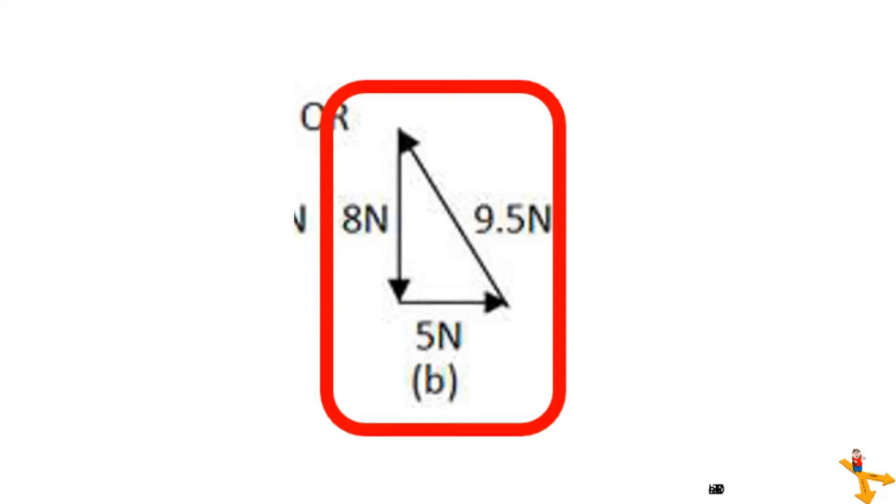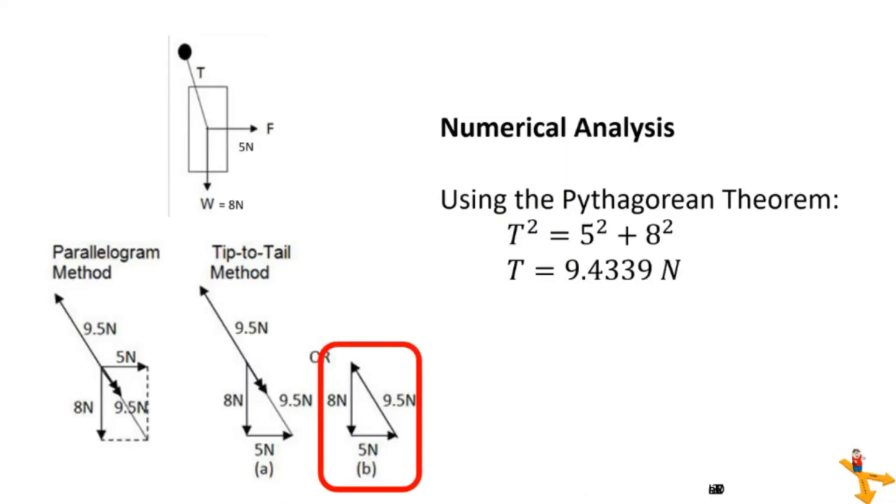To solve this using a numerical analysis, let us focus on figure enclosed in a red shape. Looking closely, observe that the shape formed by connecting the lines is a right triangle. Because of this, we can use the Pythagorean theorem to solve for the resultant. Just square the sides and add them, then get the square root of their sum. We get T equals 9.4339.